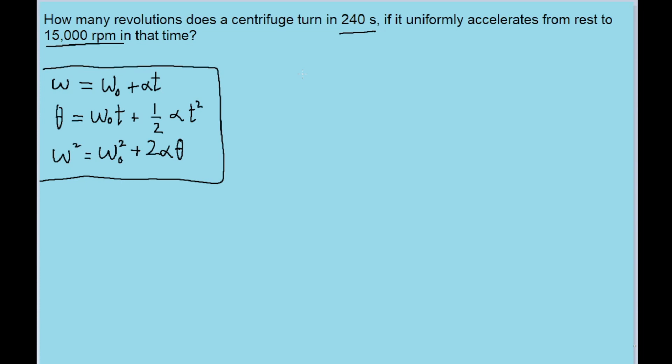But there is another way you could do this that would require only one step, and it's to make use of the lesser known fourth kinematic equation that takes advantage of the average angular velocities if you don't know the acceleration. Though of course, this only works if the acceleration is uniform, which the problem does specify.